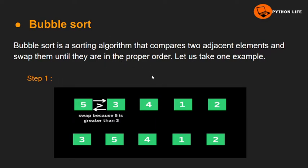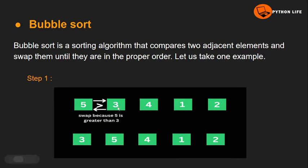So in the first iteration, the largest element moves to the last position. In the second iteration, the second largest element is in the last position, and so the total array gets sorted. Let's take an example: the array is 5, 3, 4, 1, 2.